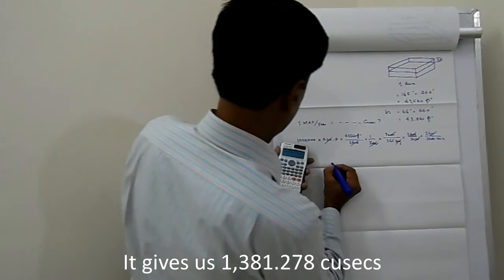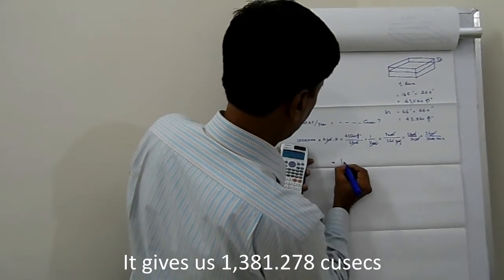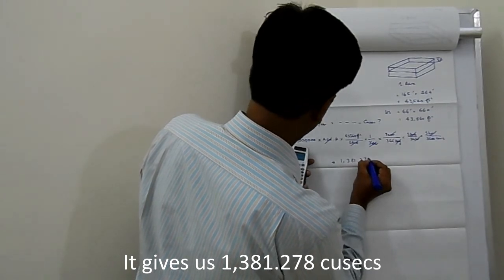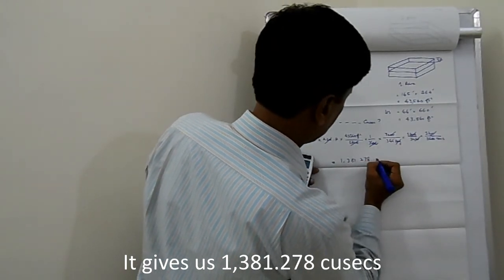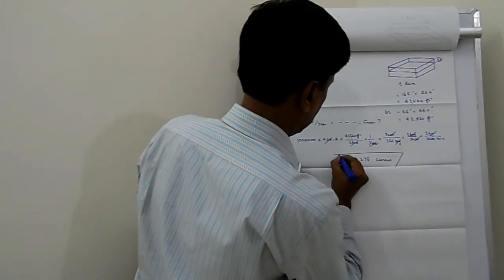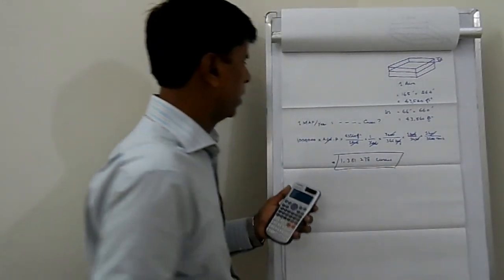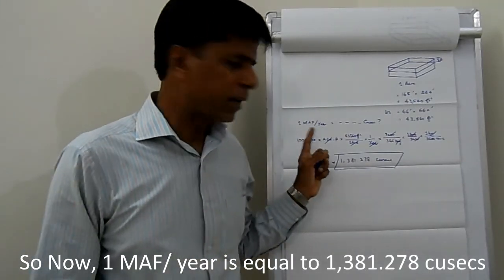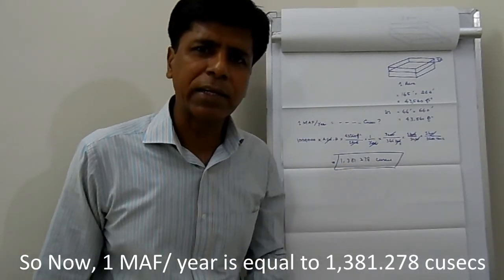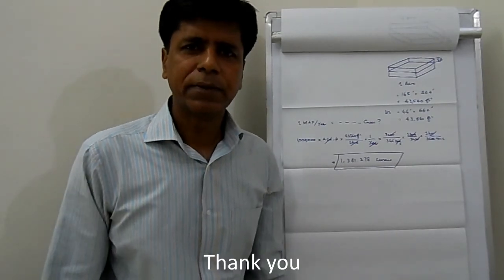It gives us 1,381.278 cusecs. So now 1 million acre feet per year is equal to 1,381.278 cusecs. Thank you.